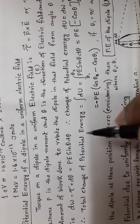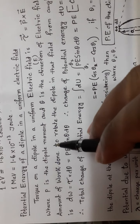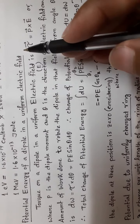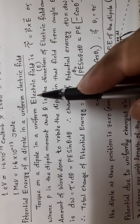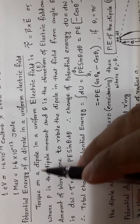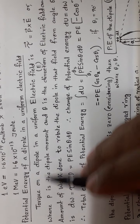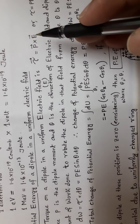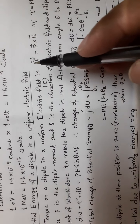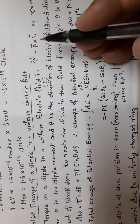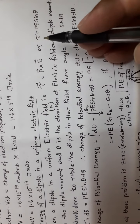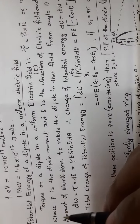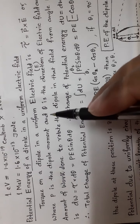The potential energy of a dipole in a uniform electric field is discussed. We take the torque, using the formula tau equal to p cross E, from the electric field chapter. The numerical result is tau equal to p E sin theta.